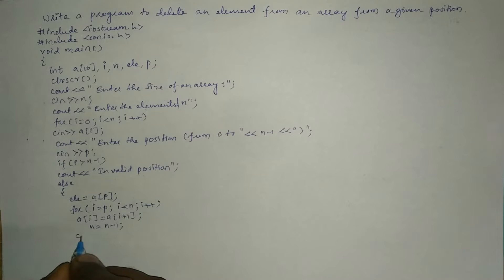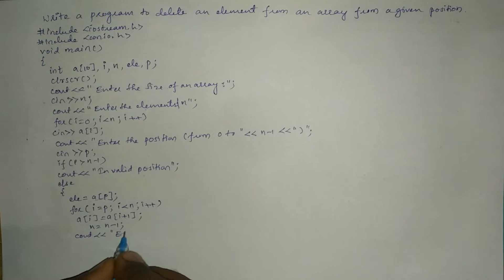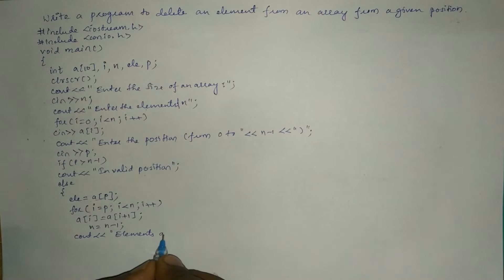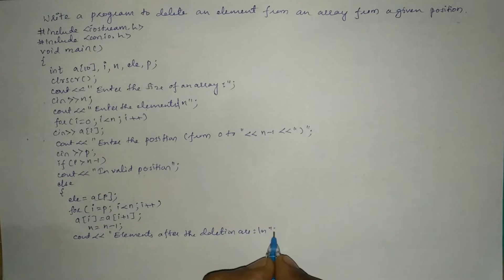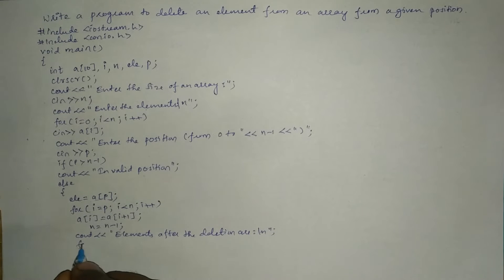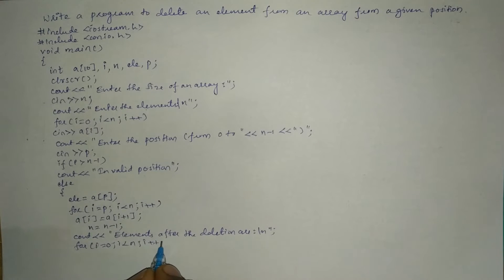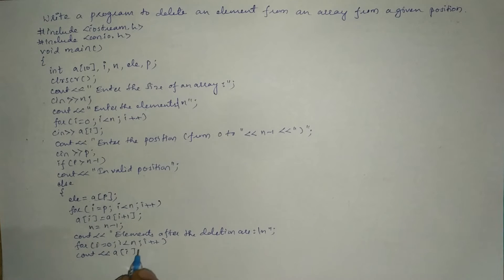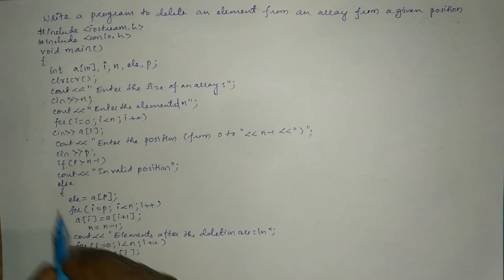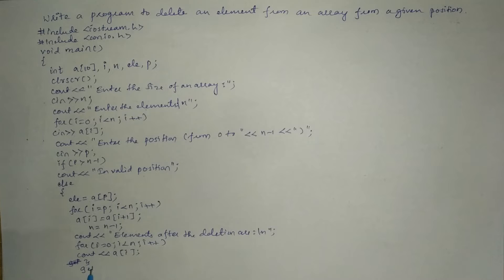Next we write a cout statement: 'Elements after deletion are:', followed by a backslash n. Then using a for loop from i = 0 to i < n, we print cout << a[i] for each element. After the else block closes, we call getch() and then close the main function.